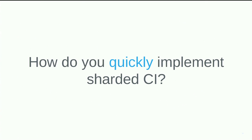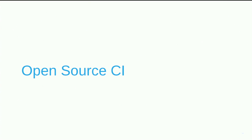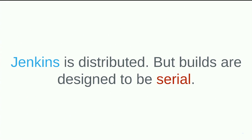So we have a bunch of requirements and we needed this system implemented yesterday because we're already burning a lot of developer time. We looked at what's out there in open source, and one of the most popular systems is Jenkins. Jenkins is great because it's distributed, so we built our CI around Jenkins. But then we started throwing lots and lots of shards at it — and then it fell over.